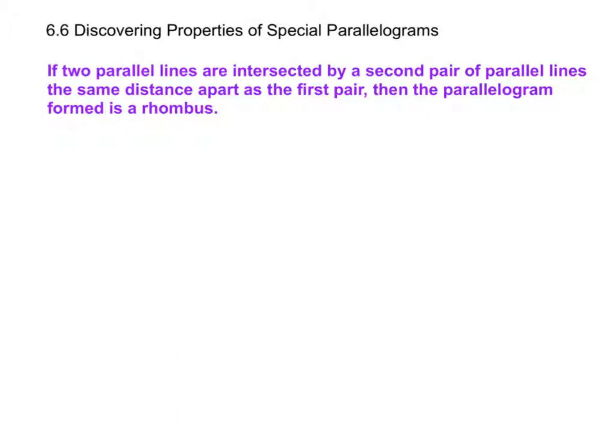Now we're going to move on to properties of special parallelograms. These are figures such as rhombuses, squares, rectangles. Our first one, it sounds kind of weird when you say it first, but it makes a lot of sense otherwise. If two parallel lines are intersected by a second pair of parallel lines the same distance apart as the first pair, then the parallelogram formed is a rhombus.